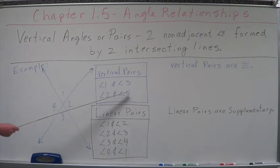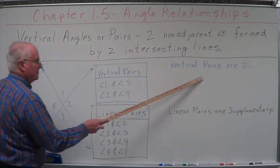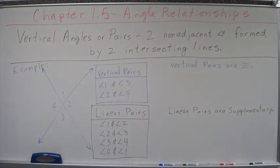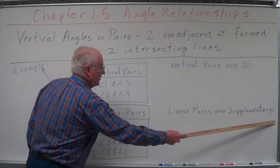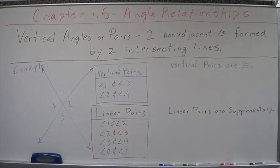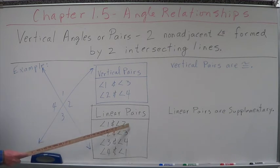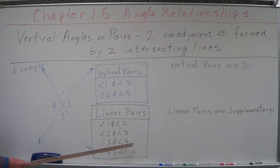Interesting thing about vertical pairs, they are congruent. What's congruent mean? That's right. Their measures are equal. Linear pairs are supplementary. Makes sense. Angle one and two are formed by opposite rays. Therefore, all opposite rays are straight lines. They form a straight line. Therefore, when I add these two together, the measures of these two, they come up to 180 degrees. Add the measure of these two together, they come up to 180. Measures of these two together, they come up to 180. Measures of one and four come up to 180.